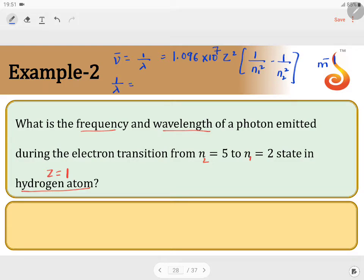Therefore, substitute 1 by lambda equals 1.096 times 10 power 7, z is 1 squared, 1 by 2 squared minus 1 by 5 squared. This is 25 minus 4, which is 21, divided by 4 divided by 25 into 1.096 times 10 power 7. You get 0.23 times 10 power 7 per meter.